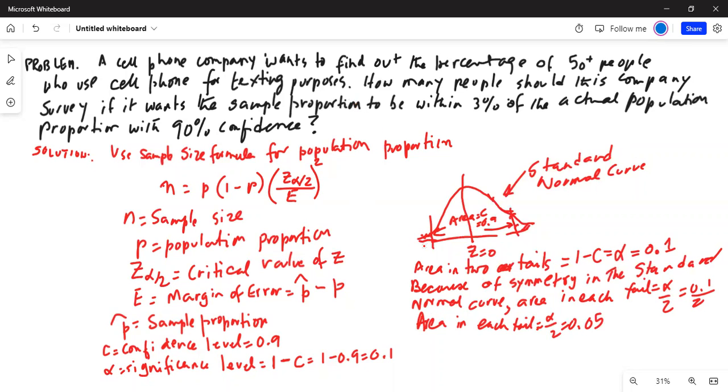So because of symmetry in the standard normal curve, area in each tail is equal to alpha by 2, which is 0.1 divided by 2. So area in each tail alpha by 2 is equal to 0.05. Now we need to find this critical value of z. This is the boundary so that the area to the right of it is 0.05.